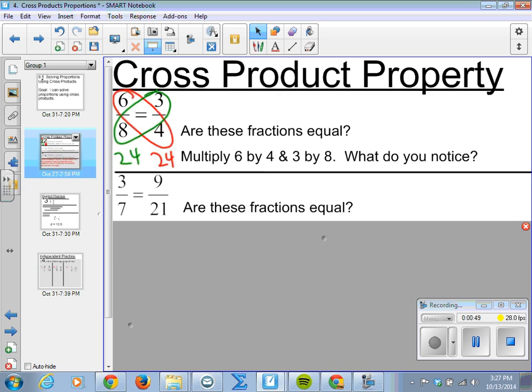Next, how about 3 7ths and 9 21sts? Well, let's see if we do 3 times 3 to get 9, and we do 7 times 3 to get 21. So we know these are, again, equivalent fractions.